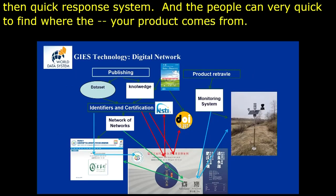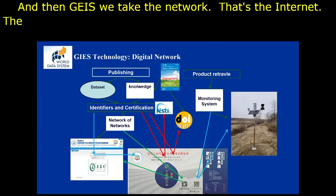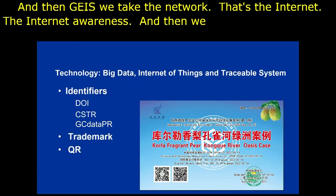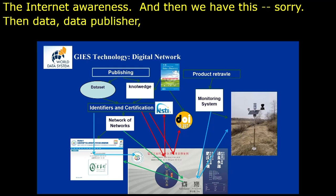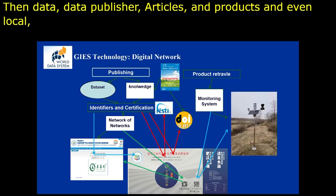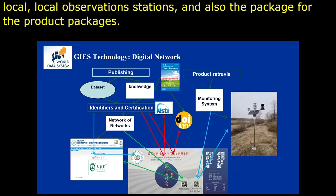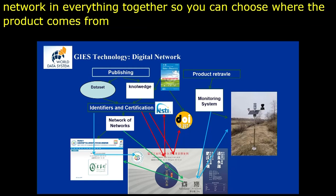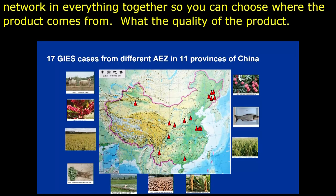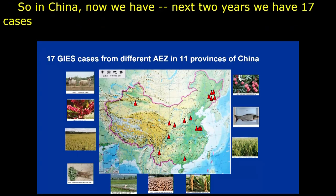When GIES takes the network — internet, wireless — we have data, published articles, products, local observation stations, and product packages all linked together in a network. You can trace where the data and the product come from and what the quality of the product is. In China, over the last two years we have 17 cases in different regions of China, covering different kinds of things — rice, and various agriculture products of high quality.